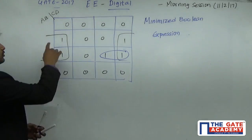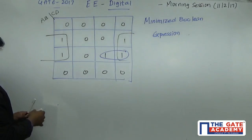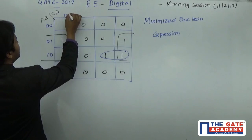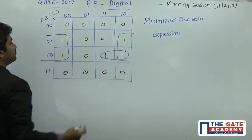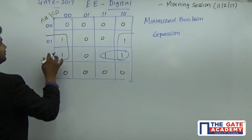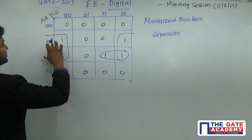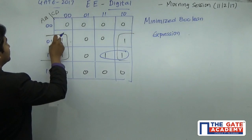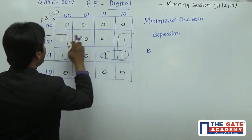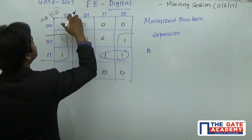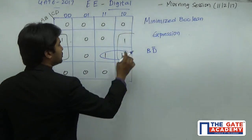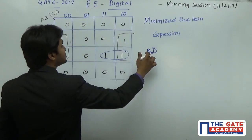Now, how are we going to write the expression for the quad here? We write 00, 01, 10, 11 on one axis and similarly 00, 01, 11, 10 on the other. In the case of this quad, the values are 11 and 10 — so b is going to be retained. Whatever is changing is not retained. So b is retained, and d is constant 0. Whenever there is a 0, we consider it as d bar. So for the quad, the representation is b·d̄.